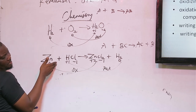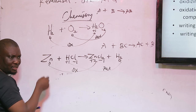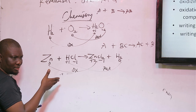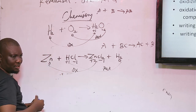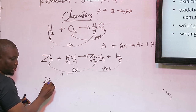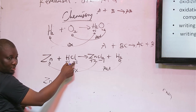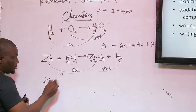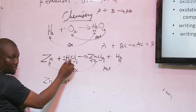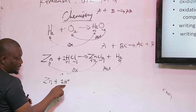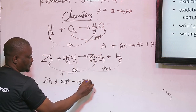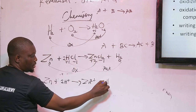Sometimes you may be asked to write the ionic equation for this reaction. Since chlorine is not changing, we remove it as a spectator ion. The ionic equation becomes: Zn + 2H⁺ → Zn²⁺ + H2.